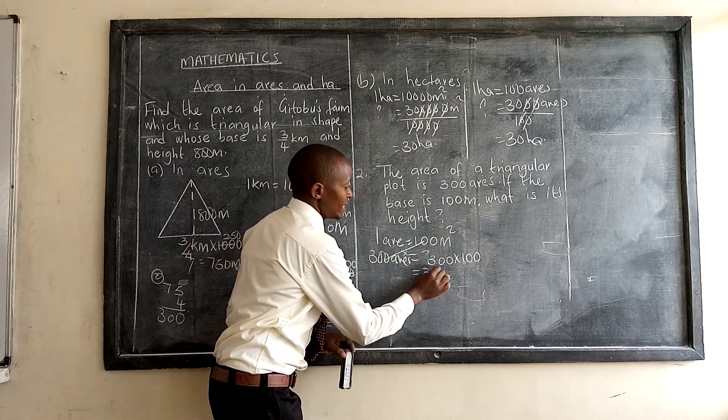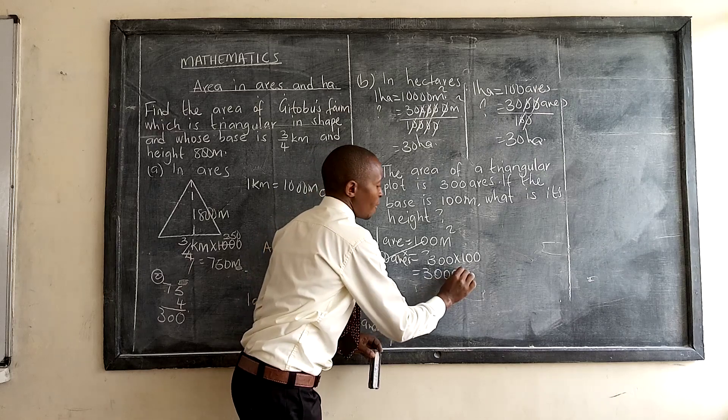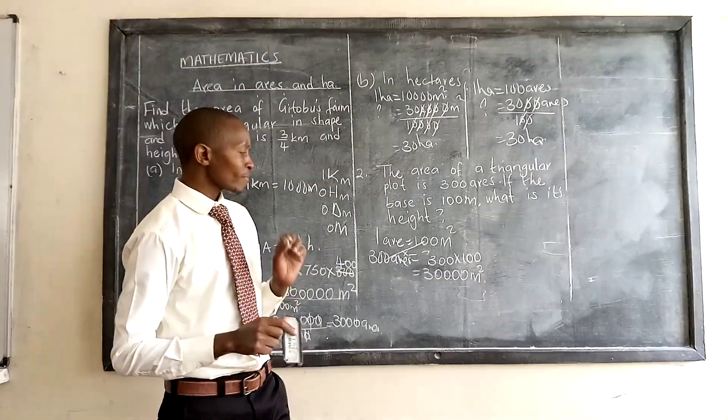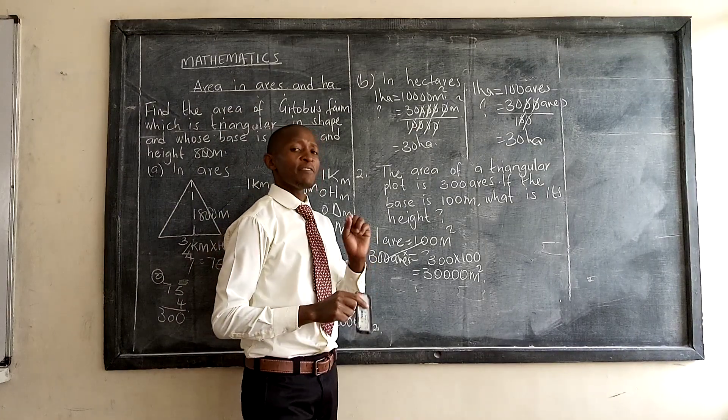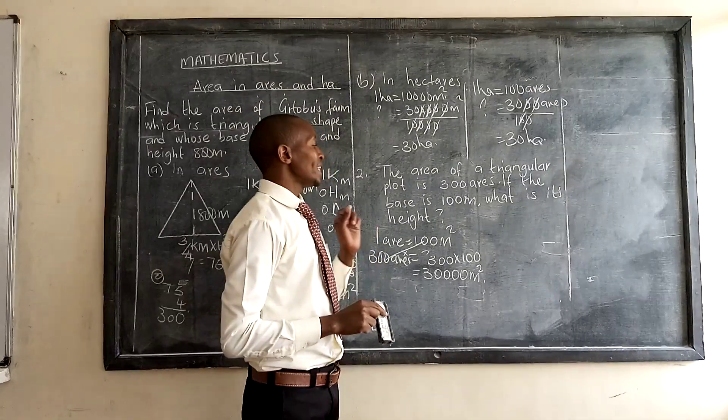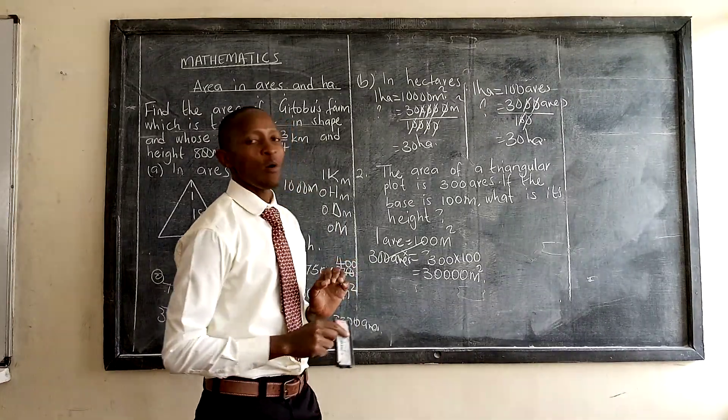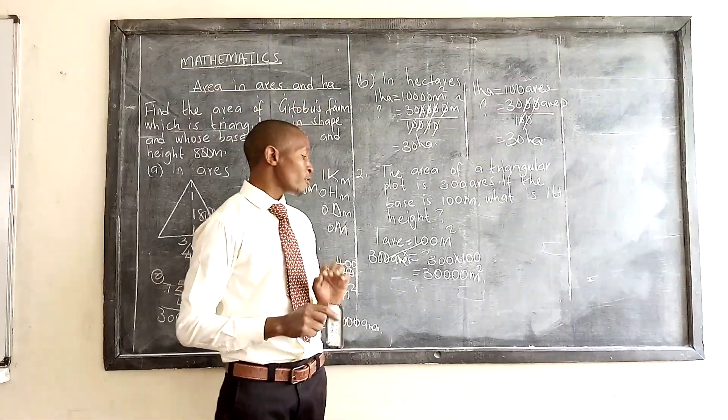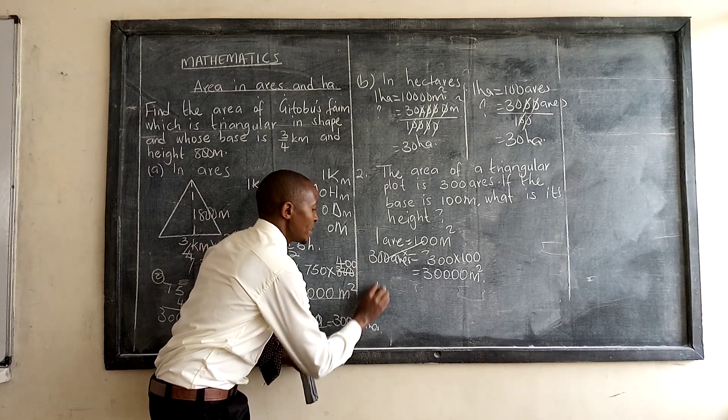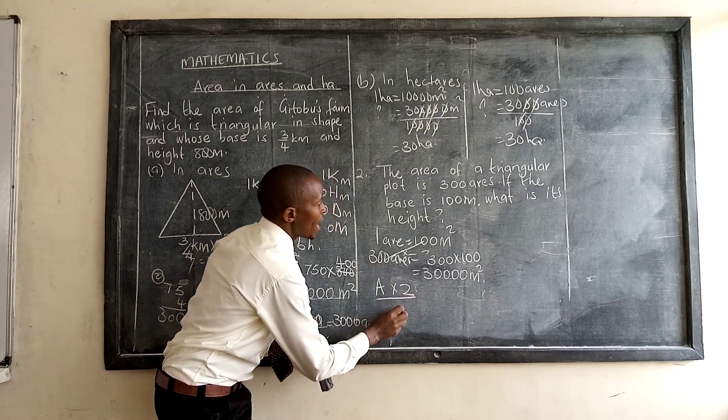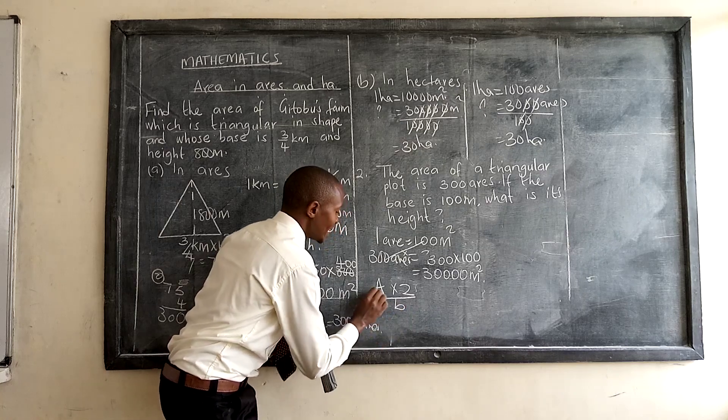So we get this as 30,000. They are now in square meters. Then we have a formula that we use in case you want to get the height given the area of a triangle. This formula is: area multiplied by 2, divided by the base. That is the height.